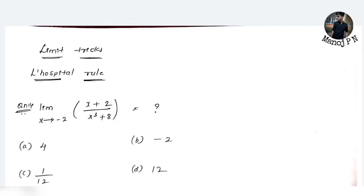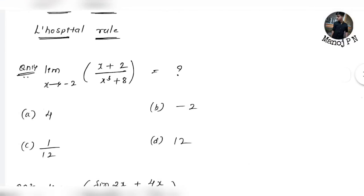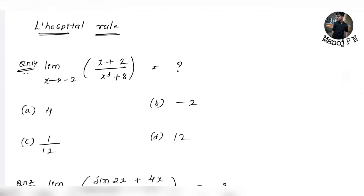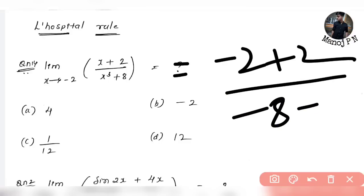Look at the first question. The first question is: Limit x tends to minus 2, of (x + 2) divided by (x³ + 8). The only thing you have to do is apply the limit to the question. Applying it gives us: (−2 + 2) divided by (−8 + 8).